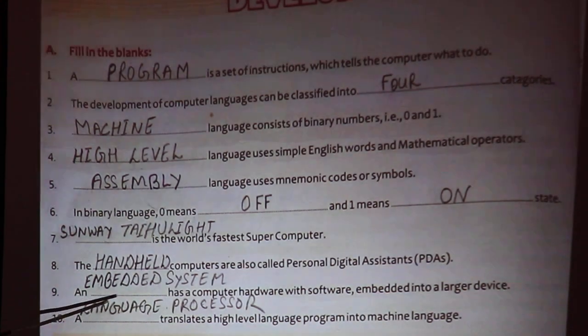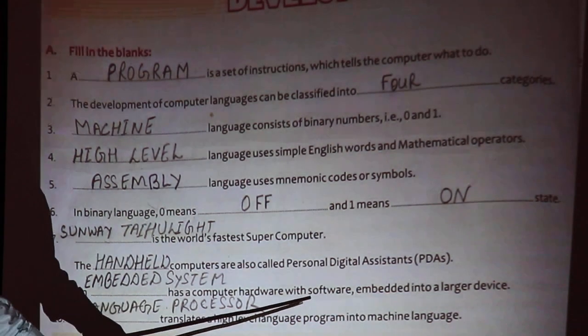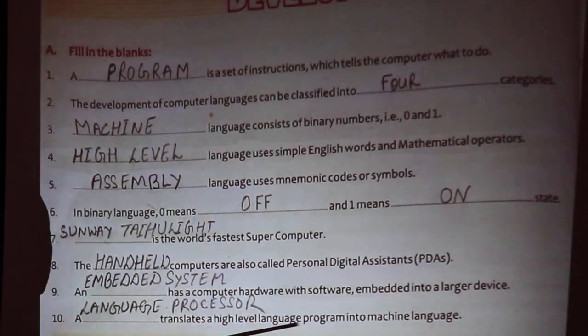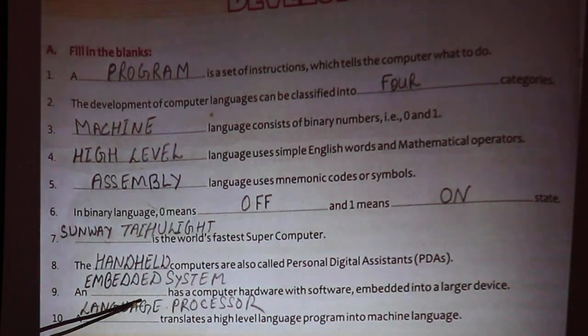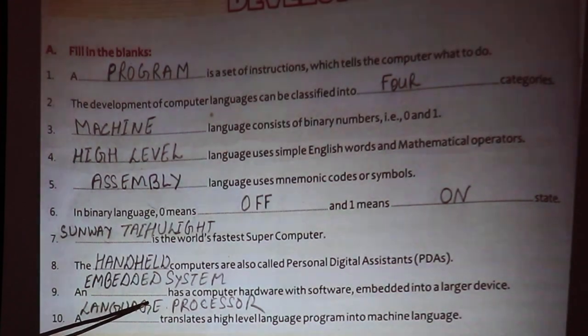A language processor translates a high level language program into machine level language. A language processor has 3 types: assembler, interpreter, and compiler.